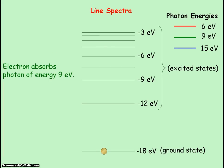If the electron absorbs a 9 eV photon, it gains 9 eV of energy and is excited to the minus 9 eV energy level. The difference between the minus 9 eV level and the ground state energy level is 9 eV.